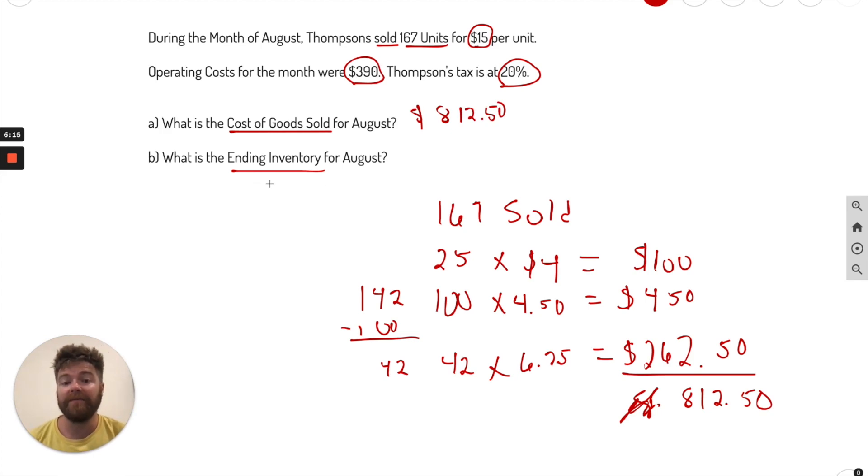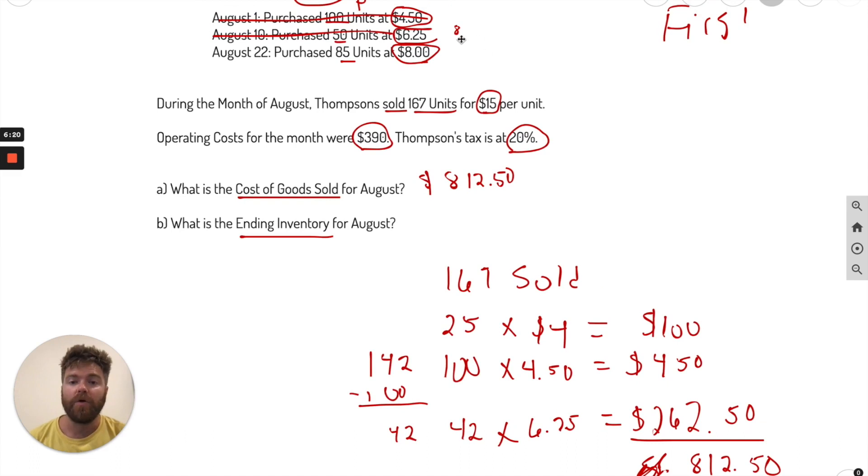Now it's asking, what is the ending inventory for August? Well, it's whatever is remaining. And so if we go back up, I can show you again. We had 8 units here remaining, and then 85 units here. So we have to multiply by the cost for each category. This was 8 times $6.25. Let's do that math here, and we get $50. And then here, we have 85 times $8, which is $680. So if we add these two up here, plus $50, we get $730. That is going to be our ending inventory. Not too bad, huh? So we went through the cost of goods sold and the ending inventory using FIFO. Now let's go to the next set of problems here.